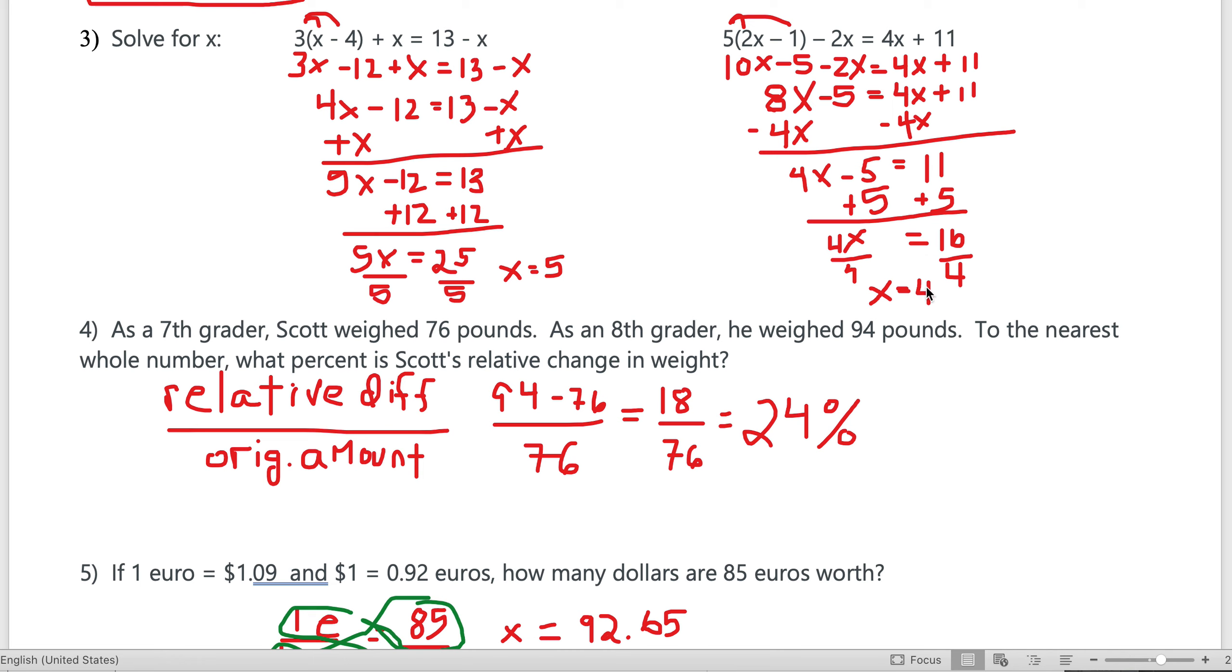Another one similar: distribute the 5: 10x - 5 - 2x = 4x + 11. Same side, same operation: 10x minus 2x is 8x, minus 5 still there, equals 4x + 11. Subtract 4x from both sides: 4x - 5 = 11. Add 5, 4x = 16, divide by 4, x is 4.